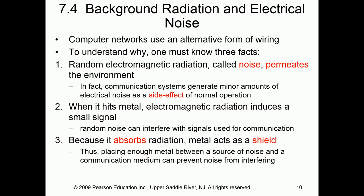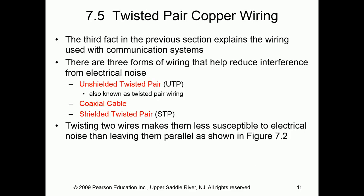There are certain types of shield that can actually absorb the radiation, thus acting as a shield. When we talk about different types of copper-based media, we talk about three major types: UTP, coax, and STP. UTP is unshielded twisted pair — what most people commonly deal with. Coax is what you're familiar with if you have broadband or cable. And last is shielded twisted pair.